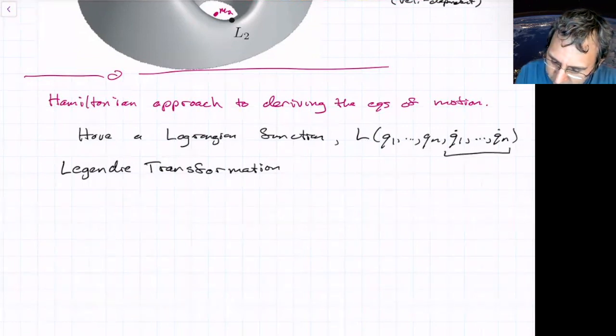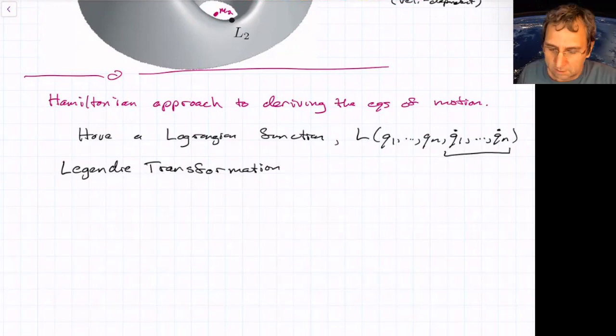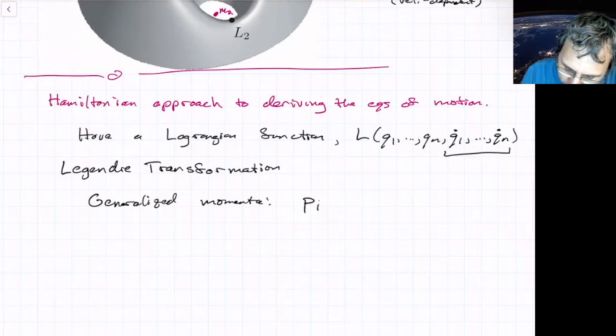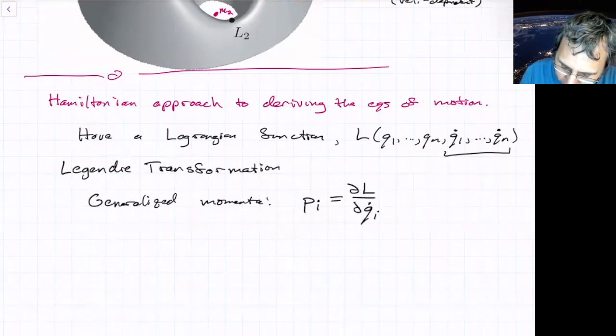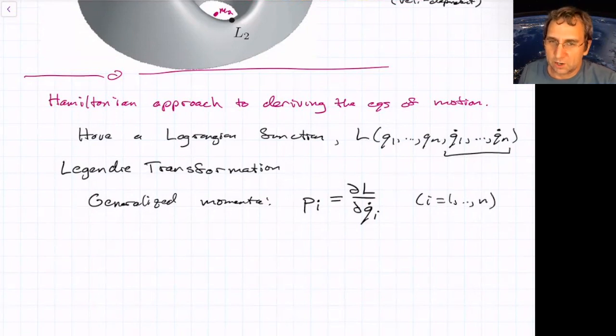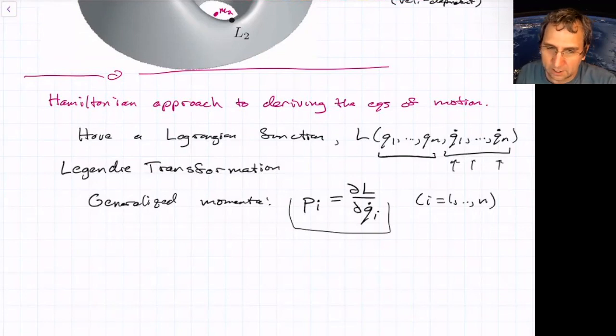But the Legendre transformation, instead of using velocities, these are velocities, that should be q1 dot through qn dot. Instead of using velocities, you use momenta. And so you define something called the generalized momenta. So the generalized momenta R, we'll call it P sub i. And you just get it from taking the partial derivative of L with respect to qi dot. And you do that for all of the coordinates. So i goes from 1 to n. But then you want to write a new function called the Hamiltonian function. It's going to be a function of the coordinates, q1 through qn, and these momenta, instead of the velocities. So this set of n equations here should be invertible so that you can write each of these q1 dot, q2 dot, all the way up to qn dot, in terms of momenta.